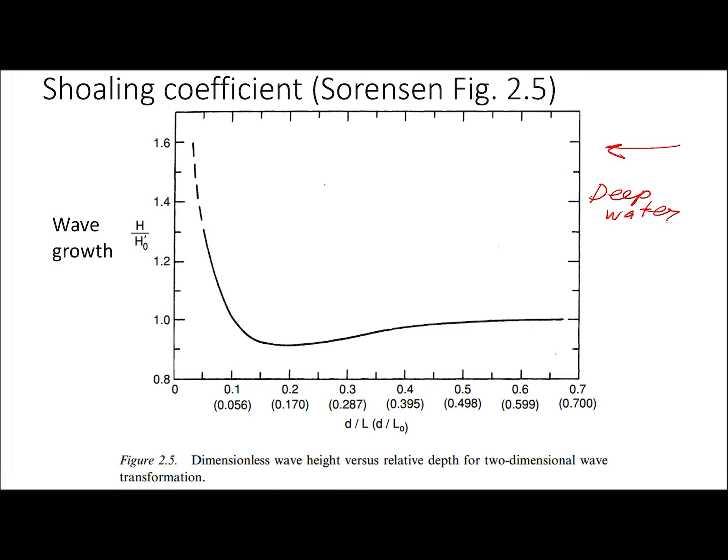In deep water it's going to have a wave height of H naught prime—that's just the notation of the diagram—and it's going to have a deep water wavelength of L naught.